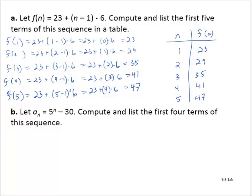Let a sub n be equal to 5 raised to the n power minus 30. Compute and list the first four terms of this sequence. This is another way to represent a sequence — the previous one used function notation, but this is the more common notation used with sequences. So a sub 1, the first term, would be 5 to the first power minus 30, which is 5 minus 30, which is negative 25.